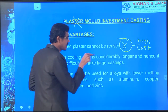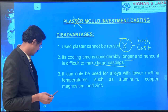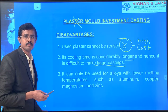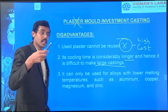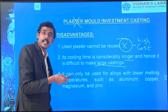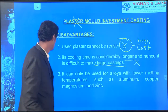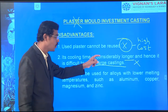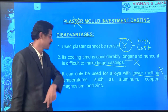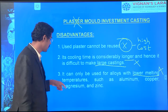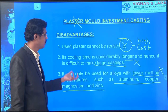The cooling time is considerably longer, hence it is difficult to make large castings. The cooling time takes more time than slurry. Plaster itself takes more time than slurry to cool. It can only be used for alloys with lower melting temperatures - aluminum, copper, and magnesium only can be used, because the plaster would melt at higher temperatures.